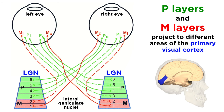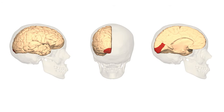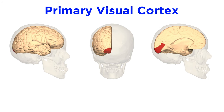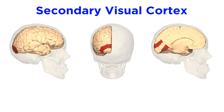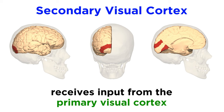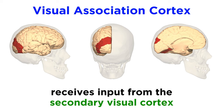These layers project to different areas of the visual cortex. Another aspect of organization is the way we can identify vertical columns perpendicular to the cortical layers themselves, which each correspond to a specific area of the retina from a particular eye. Aside from the primary visual cortex, which receives most of its input from the lateral geniculate nuclei, we also have the secondary visual cortex, named as such because it receives input from the primary visual cortex. Then there is the visual association cortex, which receives input from the secondary visual cortex as well as other areas of the brain.